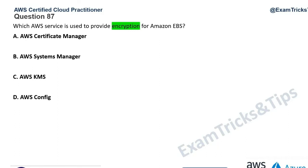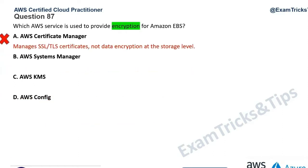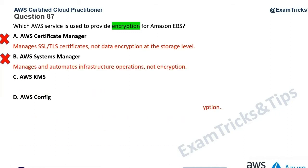Option A, Certificate Manager — this has nothing to do with encryption. It manages SSL and TLS certificates; you can store certificates there, but it's not for encryption, so that's gone. The next one, AWS Systems Manager, manages and automates infrastructure operations — it's not used for encryption, so that's gone as well.